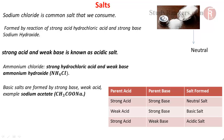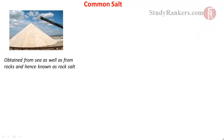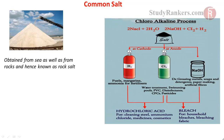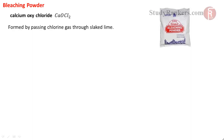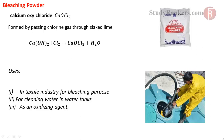Common salt is obtained from the sea as well as from rocks and is hence known as rock salt. It is a major part of our diet. In the chloroalkali process, electricity is passed through an aqueous solution of sodium chloride known as brine. The raw materials obtained directly and indirectly from this process are very useful chemicals — bleaching powder is one such product, formed by passing chlorine gas through slaked lime. It is used in the textile industry for bleaching, for cleaning water, and as an oxidizing agent.